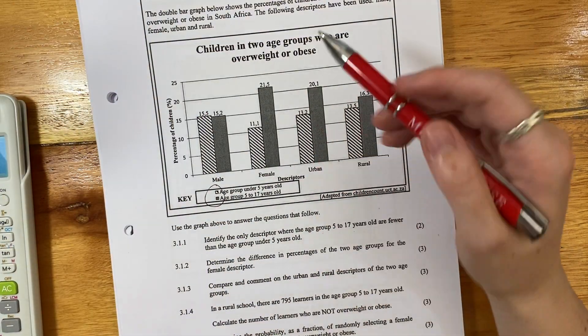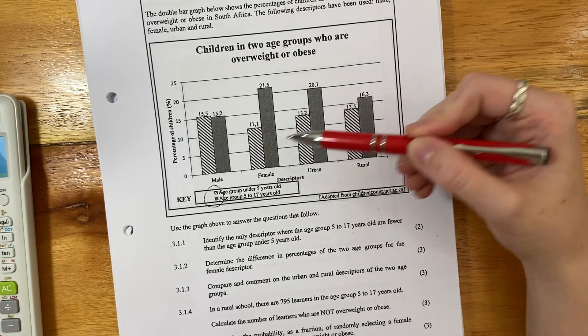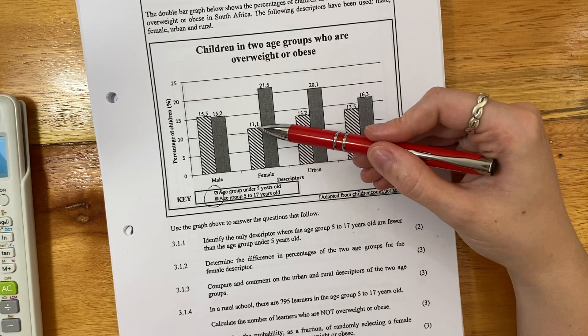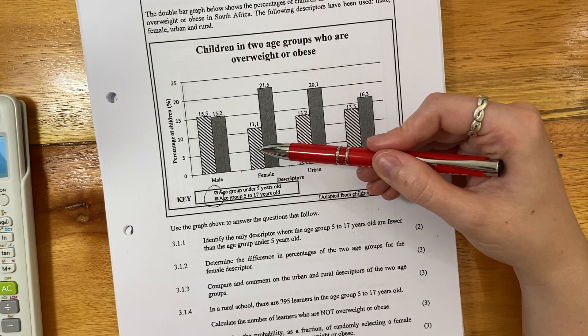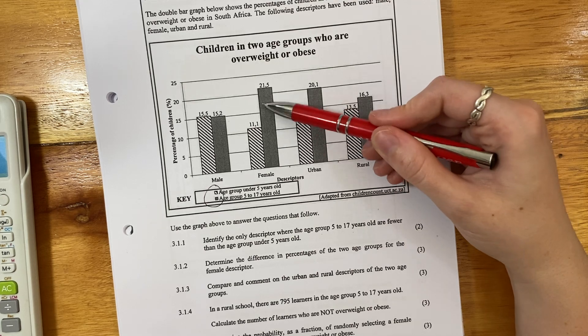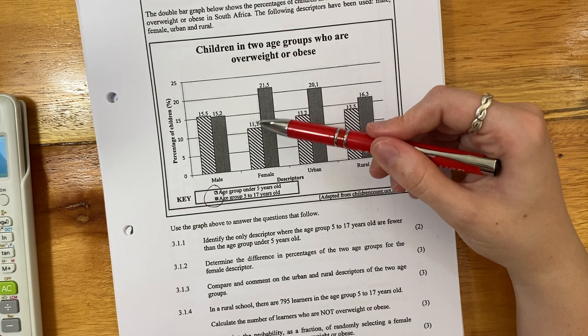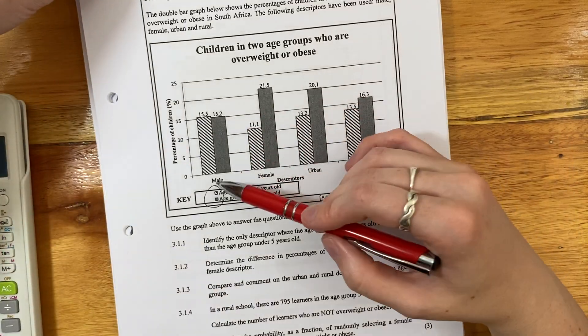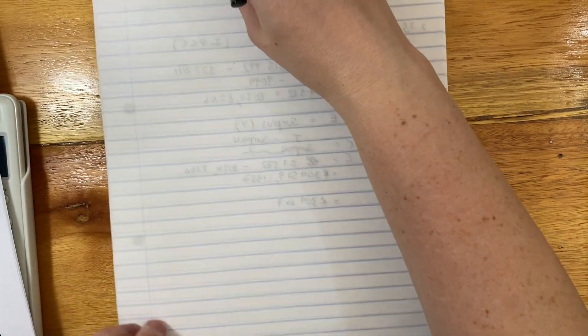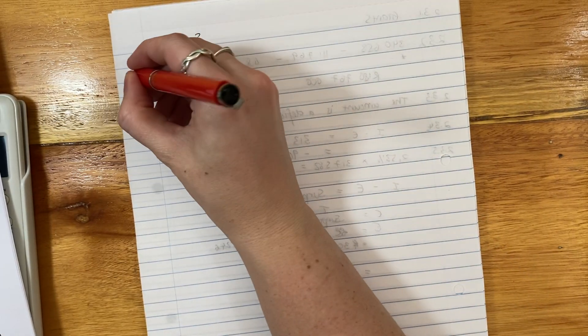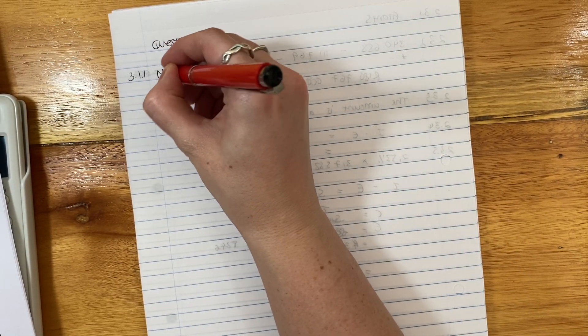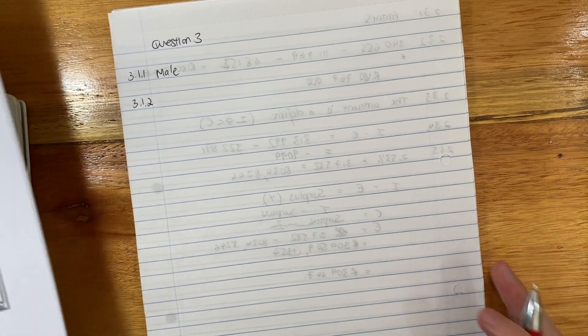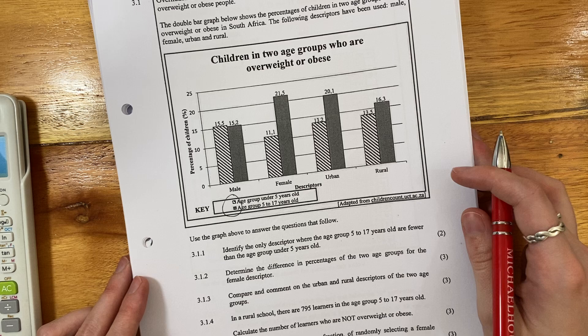Now basically what that says is that obesity generally increases with age, right? So you have overweight children and it's very highly likely that they'll be overweight when they're adults, but there'll also be a group of children that will join them as they put on weight as they grow. And I think with questions like this, it's always important just to stick to the question because sometimes there's so much information that students just want to put so much information. Just go with what's asked.